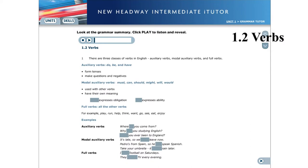1.2 Verbs. There are three classes of verbs in English: auxiliary verbs, modal auxiliary verbs, and full verbs. Auxiliary verbs: do, be, and have.